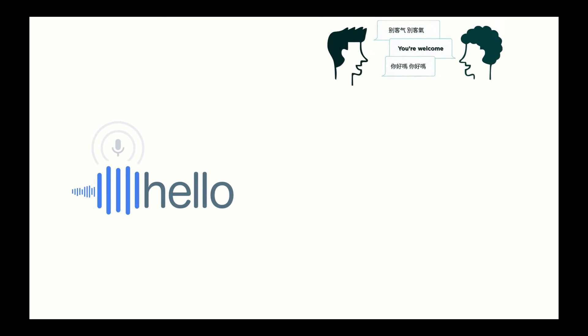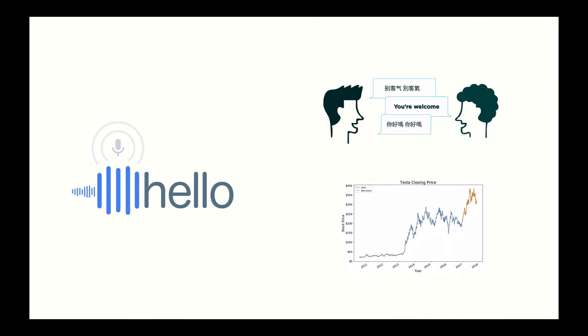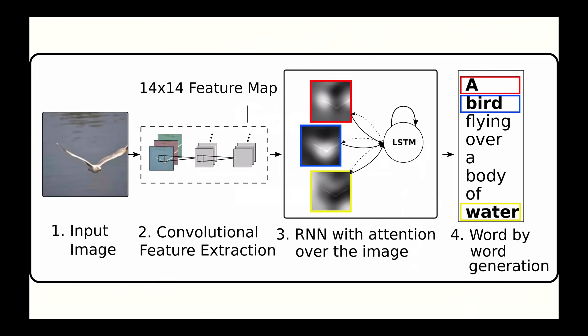Recurrent neural networks are used in speech recognition, language translation, stock prediction, and even image recognition to describe the content in pictures.